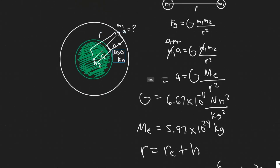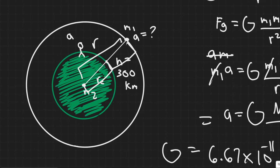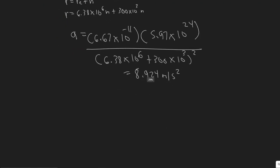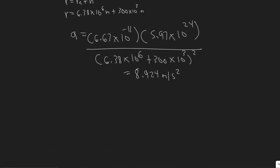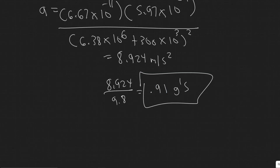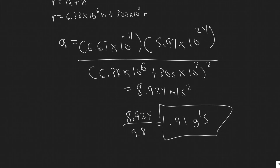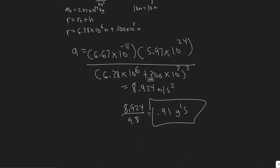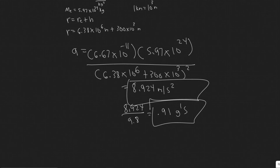Notice that the acceleration due to gravity on Earth's surface is 9.8 meters per second squared. So we can see that 8.9 versus 9.8 isn't really that big of a difference. If you calculate the ratio — 8.924 divided by 9.8 — you get about 0.91, meaning it's 0.91 g's. It's only about 9% weaker than the value of g they would experience right on the surface. So the acceleration the astronaut experiences is approximately 8.924 meters per second squared.